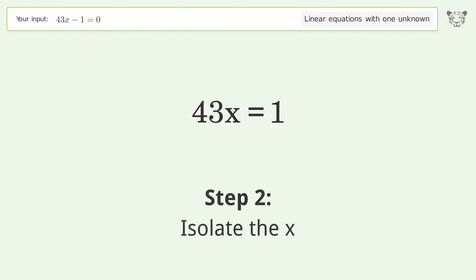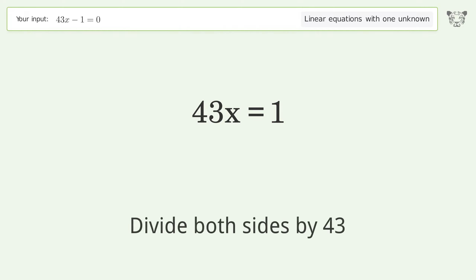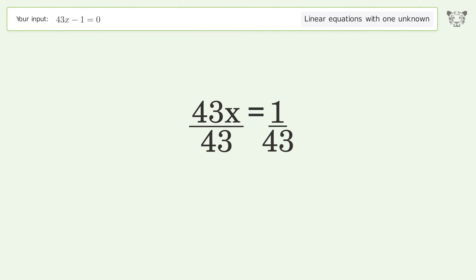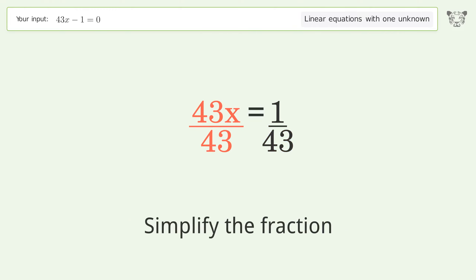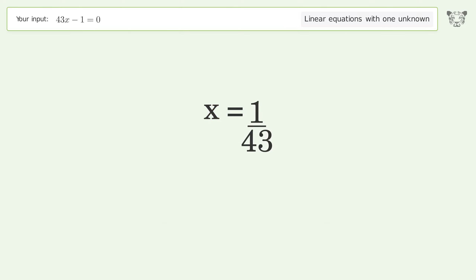Isolate x by dividing both sides by 43 and simplify the fraction. The final result is x equals 1 over 43.